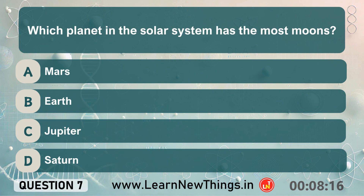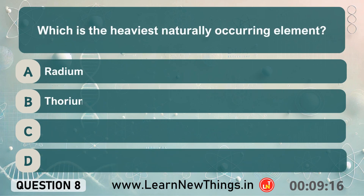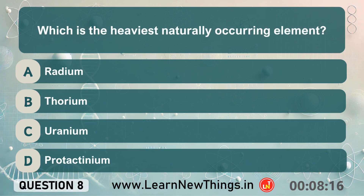Which planet in the solar system has the most moons? Saturn. Which is the heaviest naturally occurring element? Uranium.